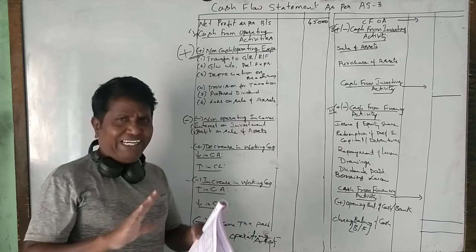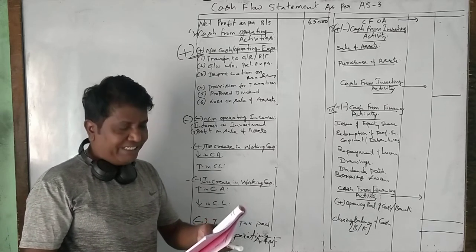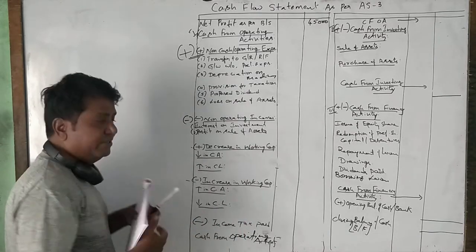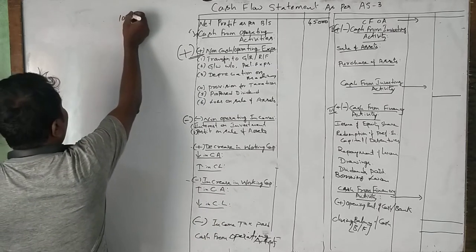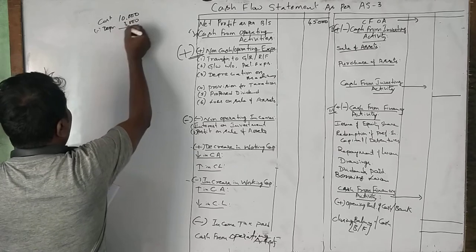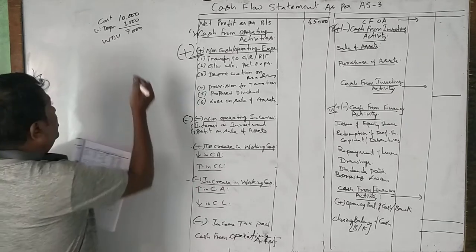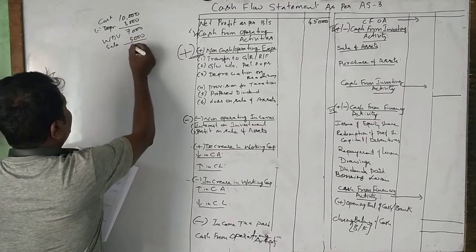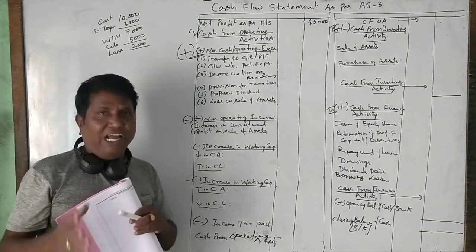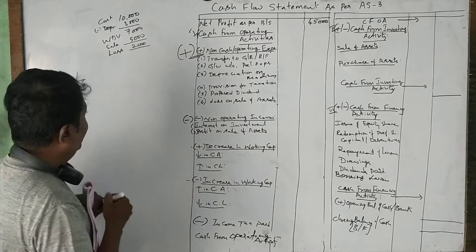Now, what is the adjustment? During the year, a machine costing rupees 10,000 had accumulated depreciation of 3,000. So 7,000 is the written down value — today's value of the machine — which has been sold for 5,000 rupees. That means we got a loss of 2,000 rupees. So we sold a 7,000-rupee worth machine for 5,000 and incurred a 2,000 rupee loss. We need to take this in the machinery account.